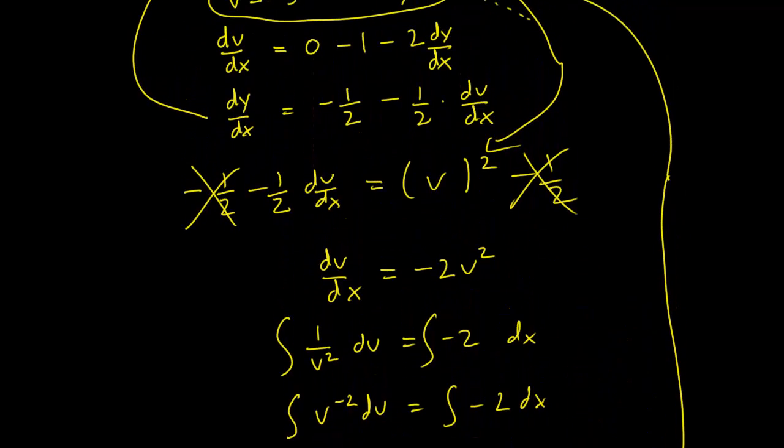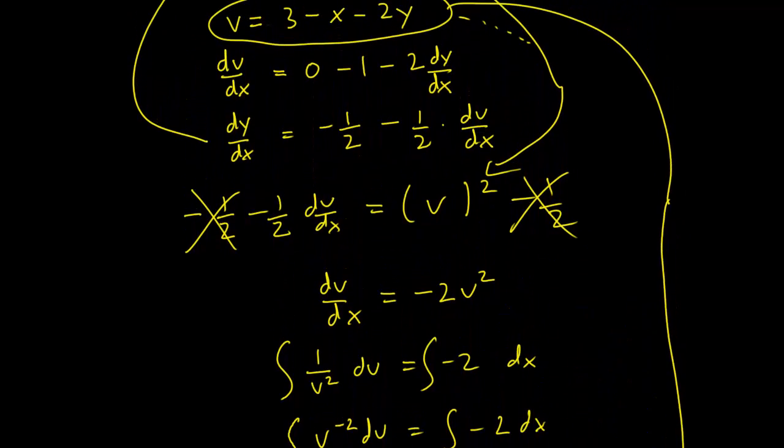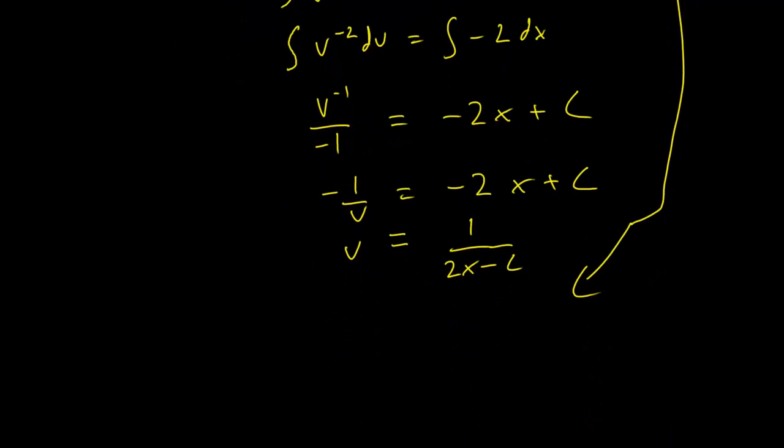So we had that v equals 3-x-2y, which implies that y is going to be equal to (3-x-v)/2.